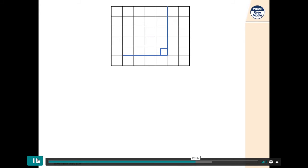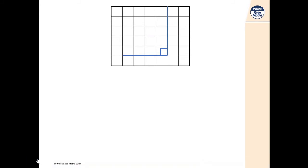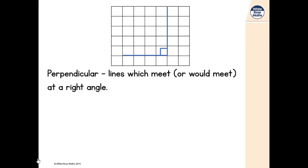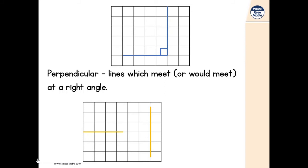The next word we're going to learn is perpendicular. Two perpendicular lines meet at a right angle — shown with the special right angle symbol. Even if two lines don't physically touch, if you imagine them continuing and they would meet at a right angle, then yes, those two lines are perpendicular. Imagine that horizontal line continuing — they would meet at a right angle, so they are perpendicular even though they're not actually meeting on the drawing.